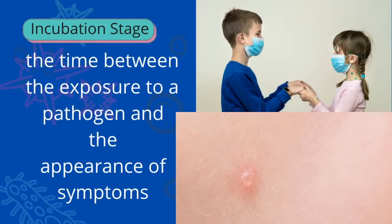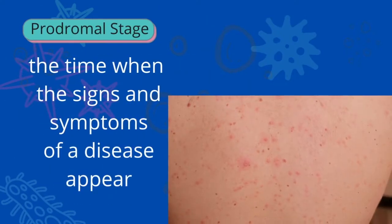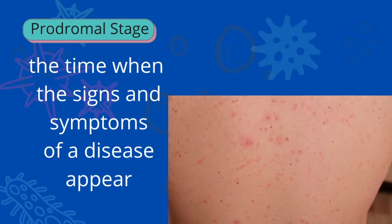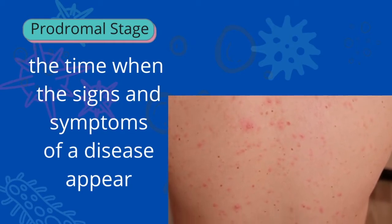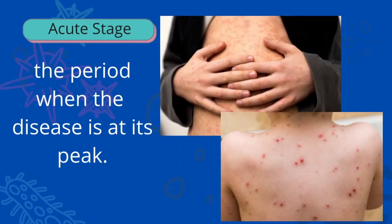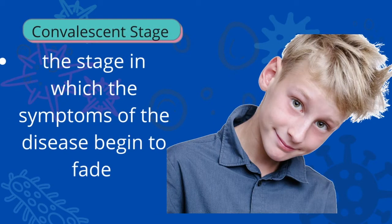Those watery blisters erupt on your skin. After a few days, you will proceed to the next stage called the prodromal stage, wherein the first signs and symptoms appear — some blisters start forming, others are growing, and others begin to come out.